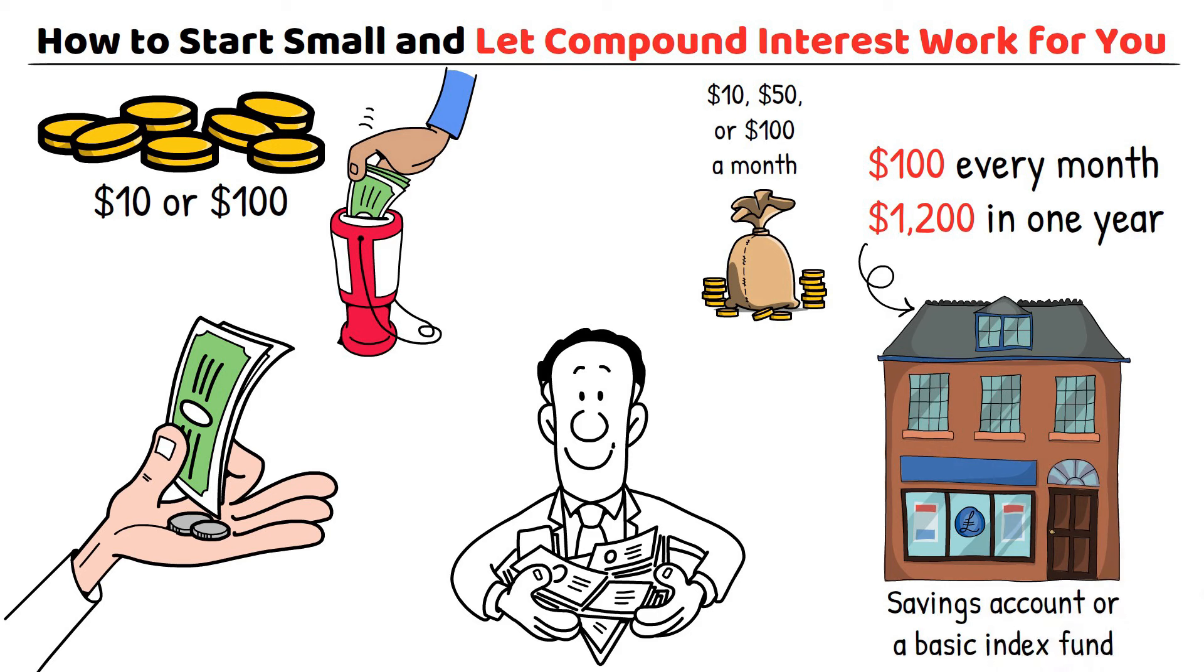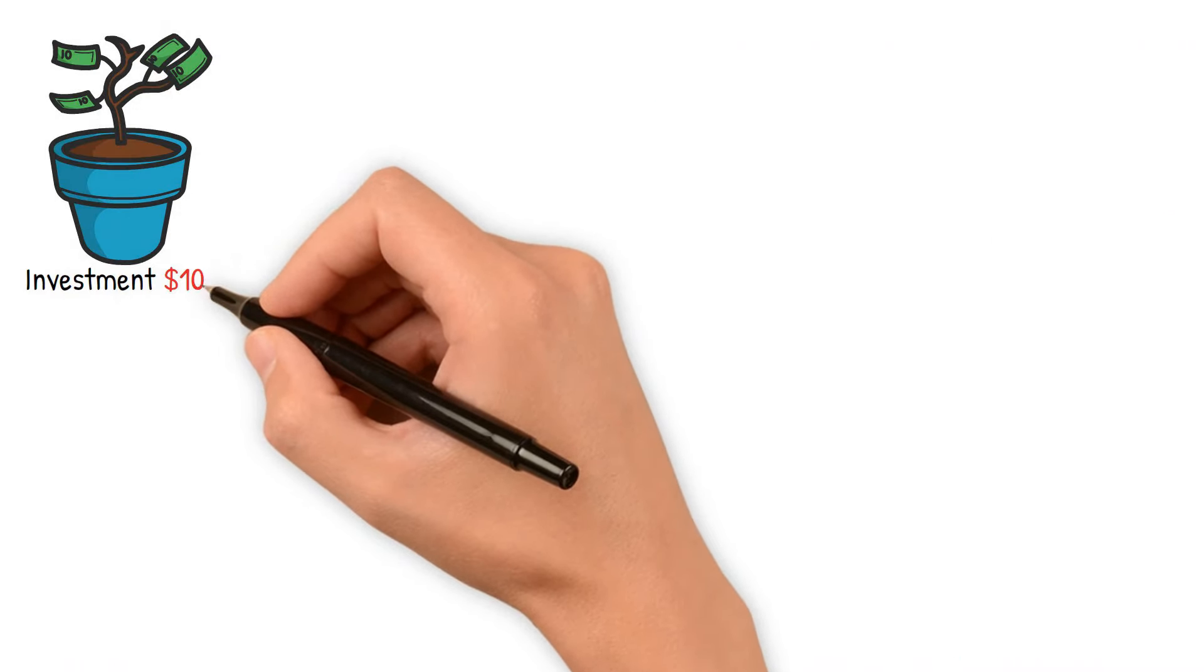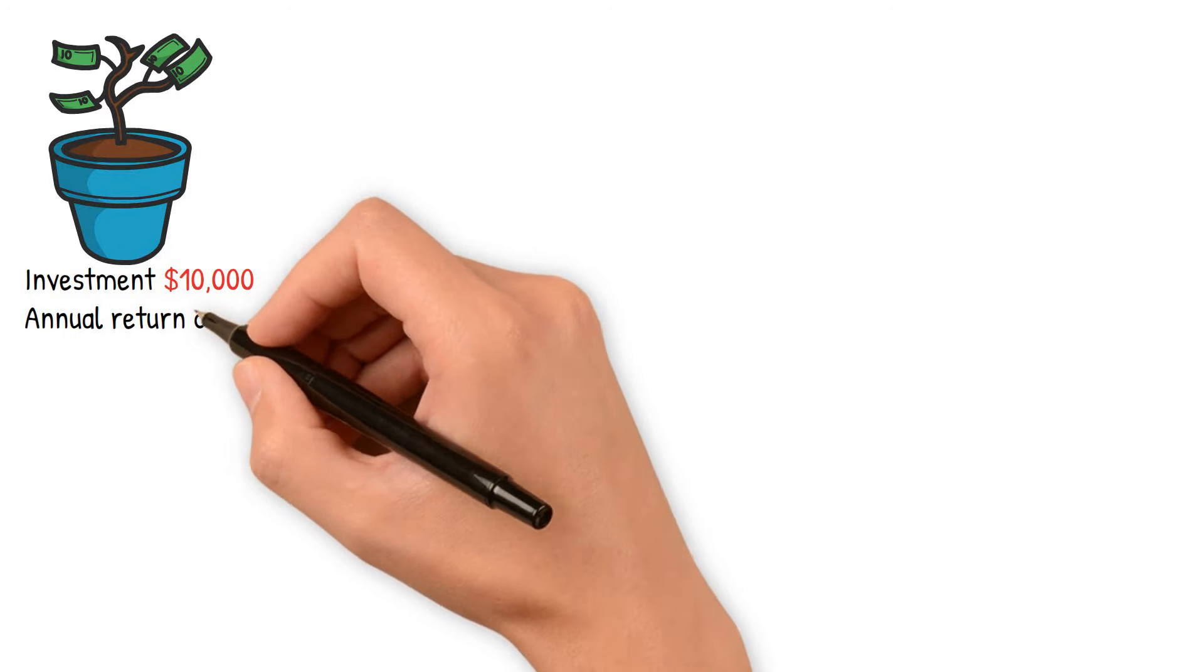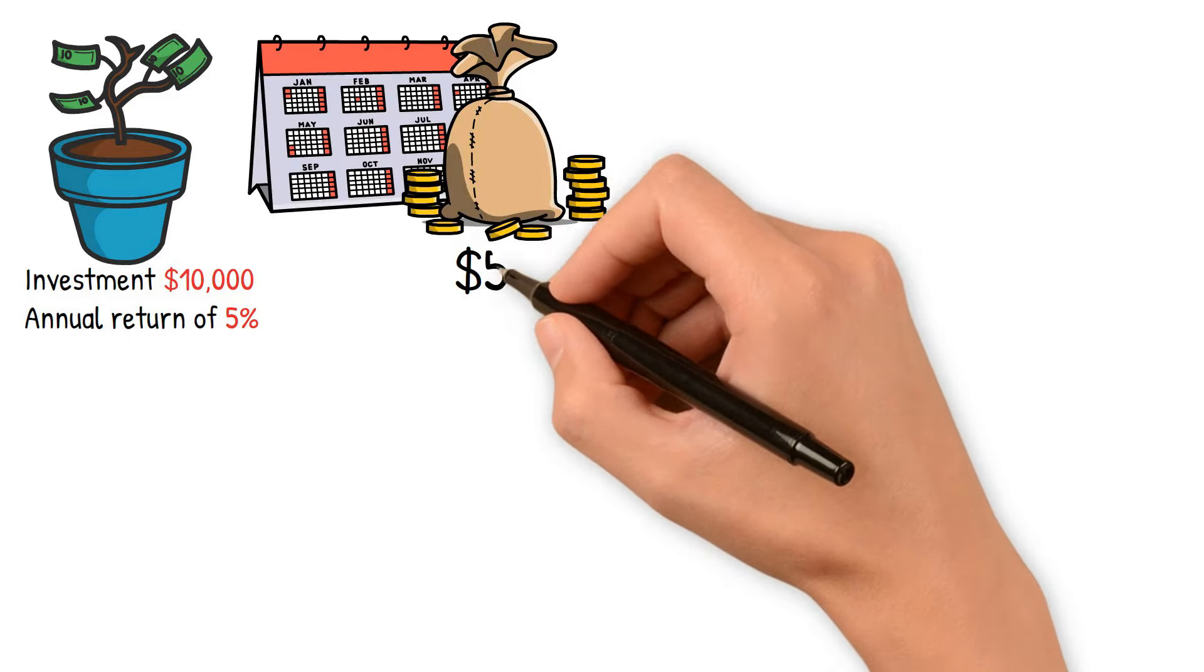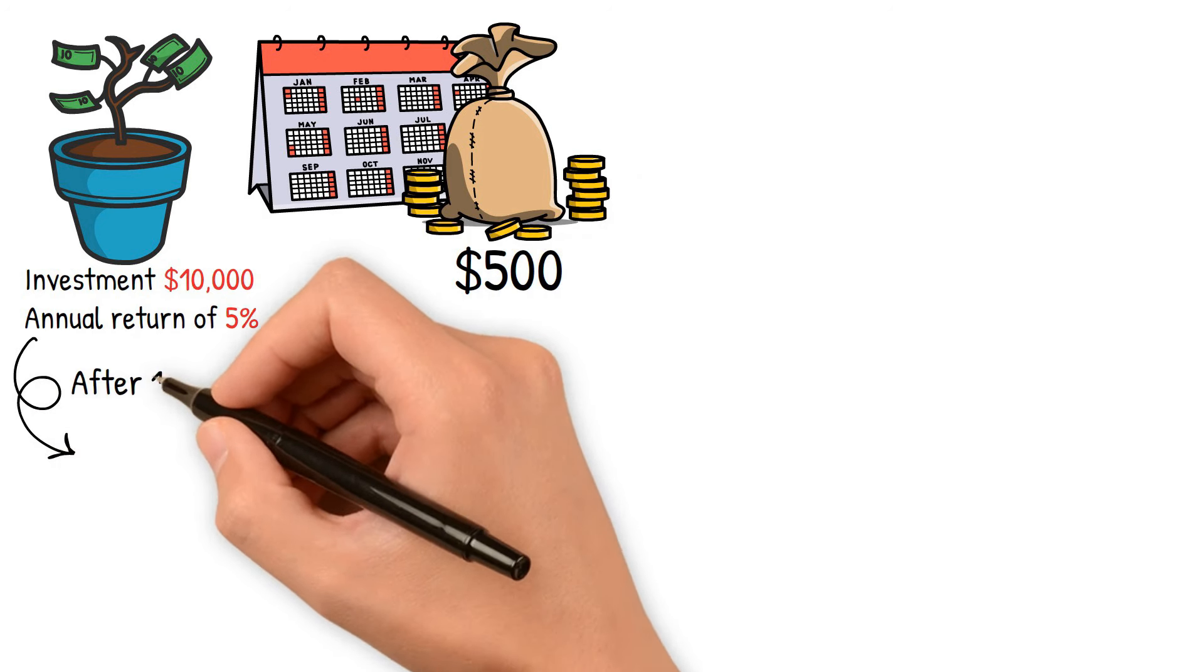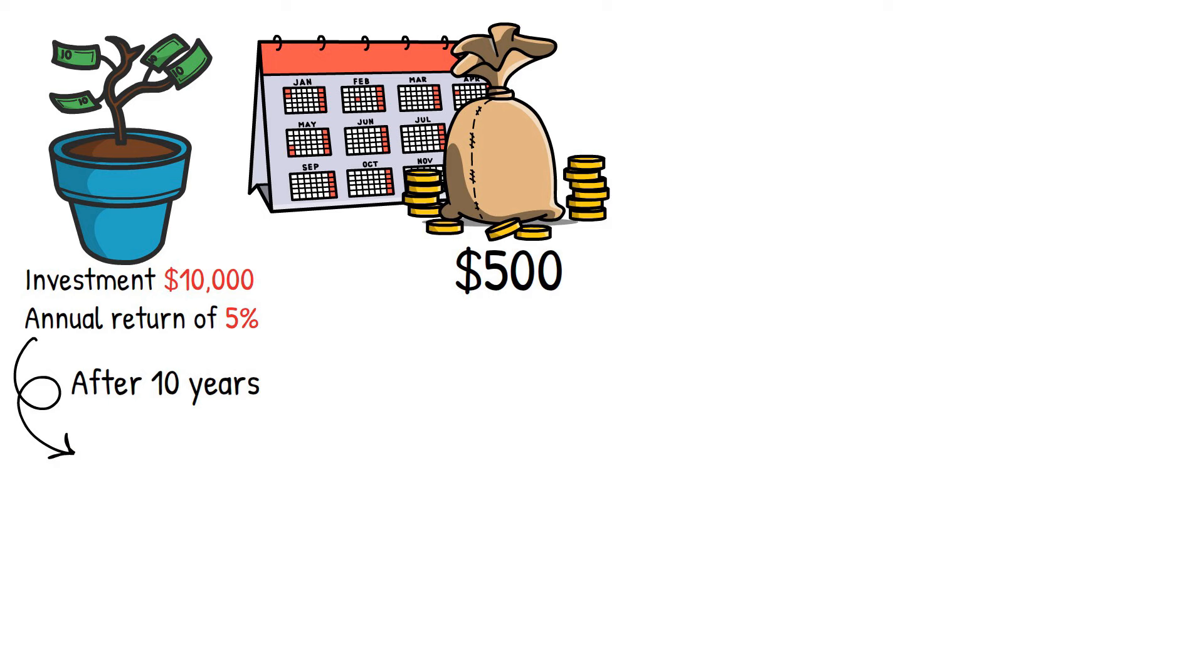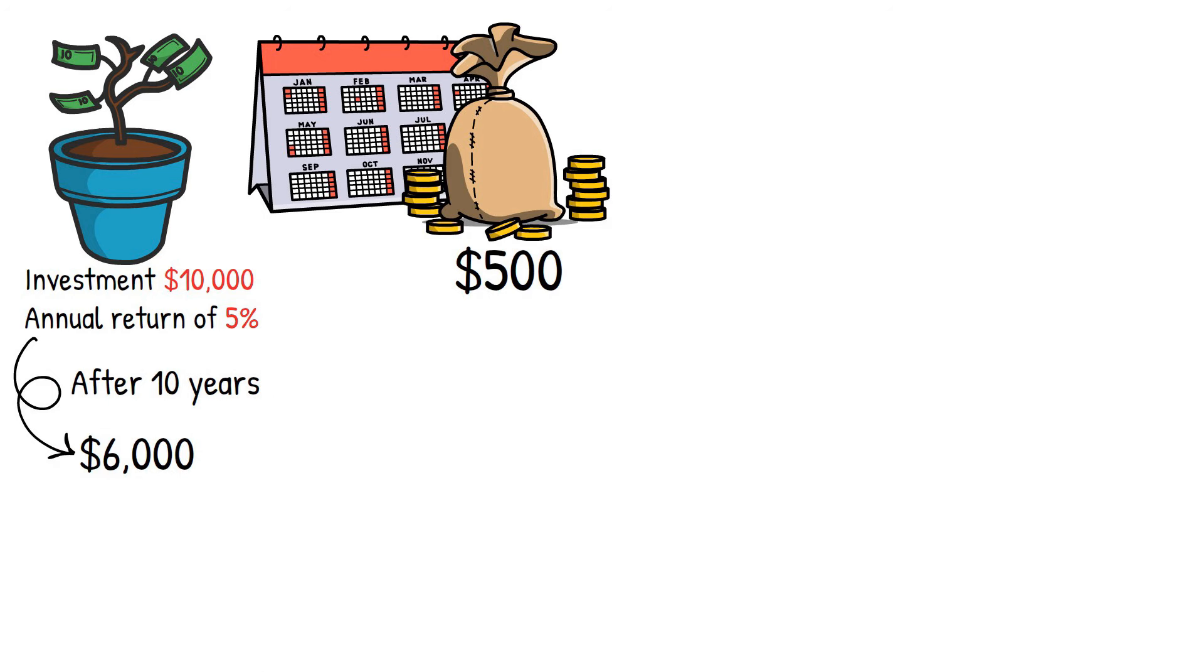Now, moving forward, let's discuss how these numbers play out over time with the power of compound interest. Imagine you have $10,000 invested, and you're getting a hypothetical annual return of 5%. After one year, you'll have earned an extra $500 without doing anything else. That's your money starting to work for you. Fast forward 10 years, and that initial $10,000 will have grown by about $6,000 thanks to the power of compound interest.